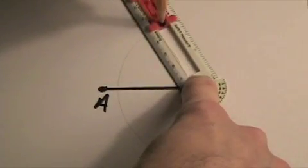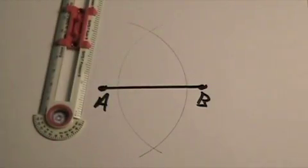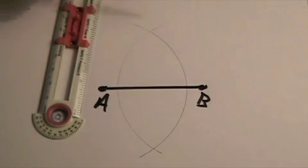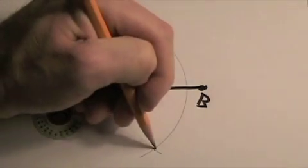Don't move the slider. Use the same opening on the slider. What you've got now is you've got two arcs that intersect above and below.